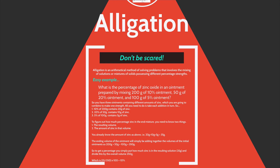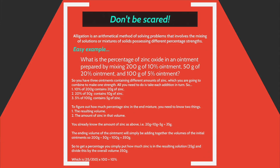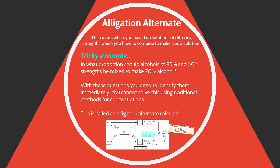Lastly, at the peak of the triangle: allegation. Make sure you're not scared of it. Allegation is an arithmetical method of solving problems that involve the mixing of solutions or mixtures of solids possessing different percentage strengths. You're essentially getting two solutions and mixing them together to create a new concentration. Be warned that there is something called allegation alternate.